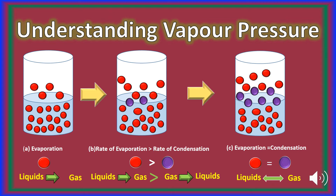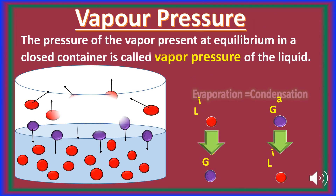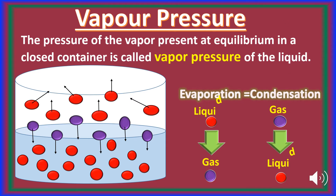So here dynamic equilibrium is established between the liquid and its vapors. At this stage, the pressure exerted by the vapors at equilibrium on the liquid surface is called the vapor pressure. Vapor pressure is the pressure of the vapor present at equilibrium in a closed container, or the pressure of the vapors when a liquid and its vapors are in a state of dynamic equilibrium.